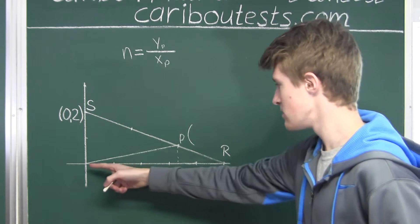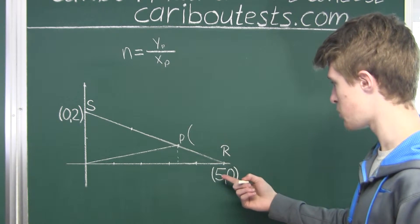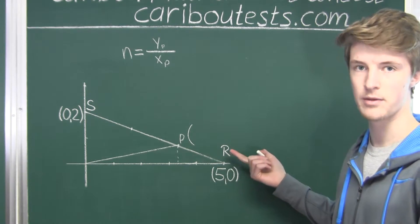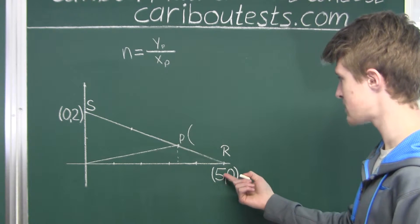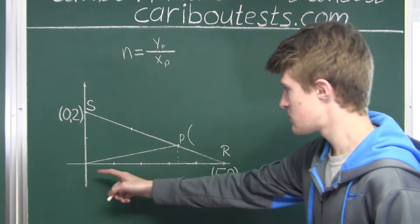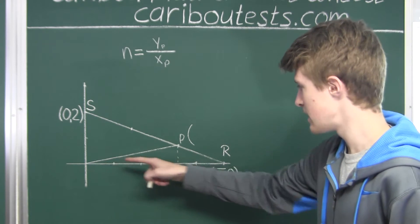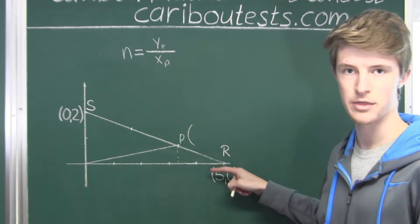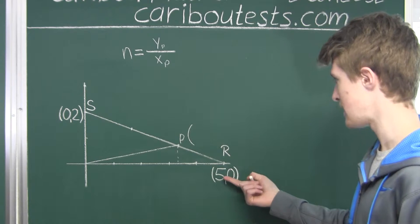And we know that the length of this bottom segment is just the X coordinate in this point of the point R, which we know is 5. And since we are going from the origin to that point, that would then be 1 minus this 1 third is 2 thirds of the length 5.